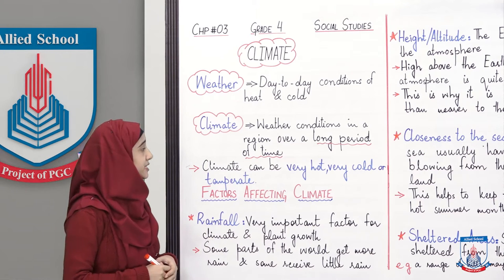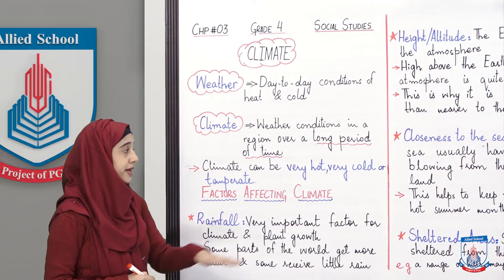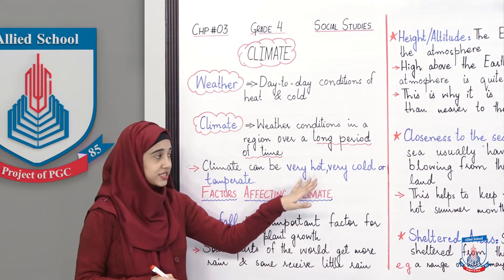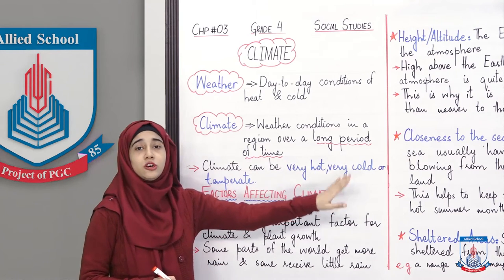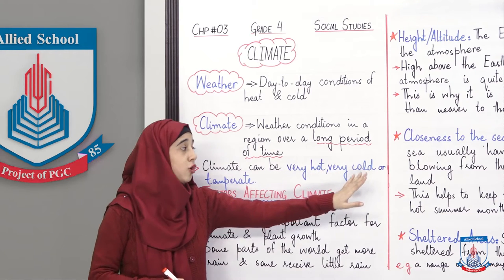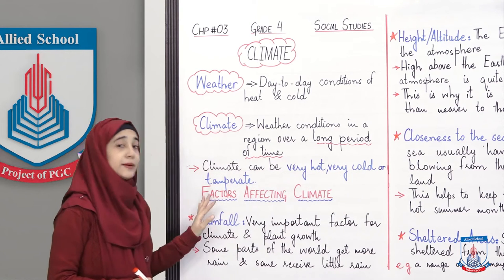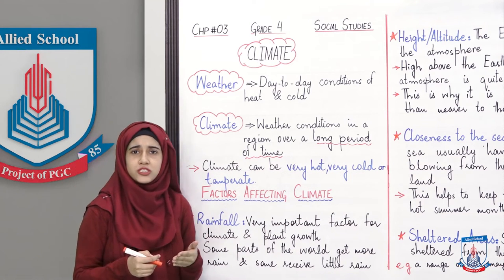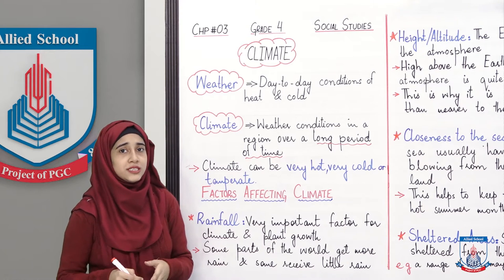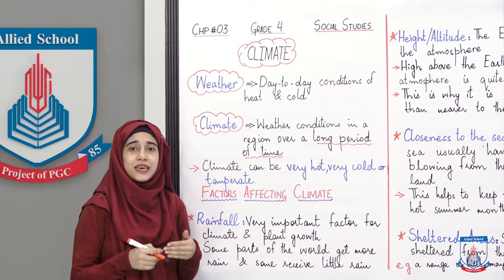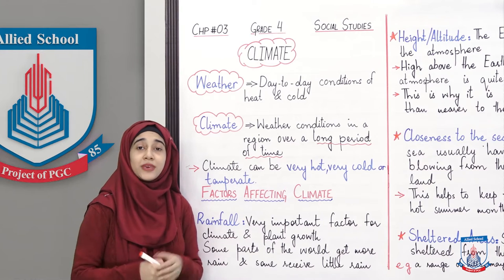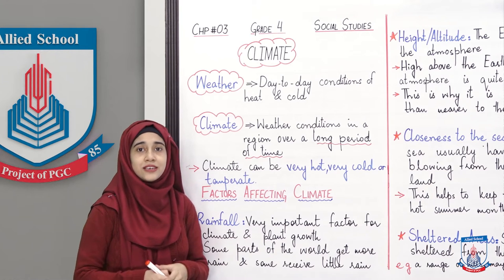Climate can be very hot — یعنی climate بہت شدید گرم بھی ہو سکتا ہے. It can be very cold — بہت ٹھنڈا بھی ہو سکتا ہے. And temperate or midway — یعنی نہ بہت ٹھنڈا، نہ بہت گرم، بلکہ درمیانہ. تو اس کو ہم climate کہیں گے.